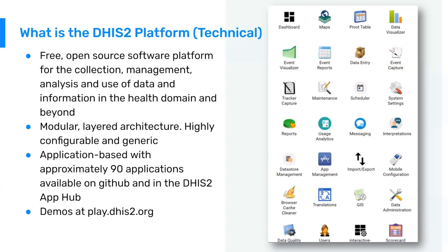This application ecosystem — the core plus the third-party developed ones — are all resting on top of a data warehouse. This data warehouse is what is storing all the data, and the applications are going in and adding new data or pulling out data for analytics. There are currently about 90 applications that have been developed outside of the University of Oslo that are available on the DHIS2 app hub. The DHIS2 app hub is a place where people can share the applications they've developed, and then anyone can come and use those applications in their own DHIS2 instances.